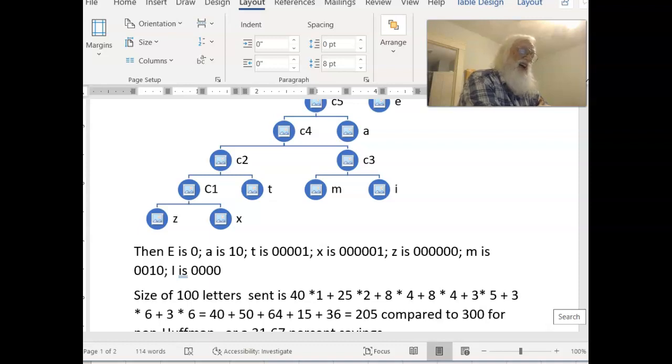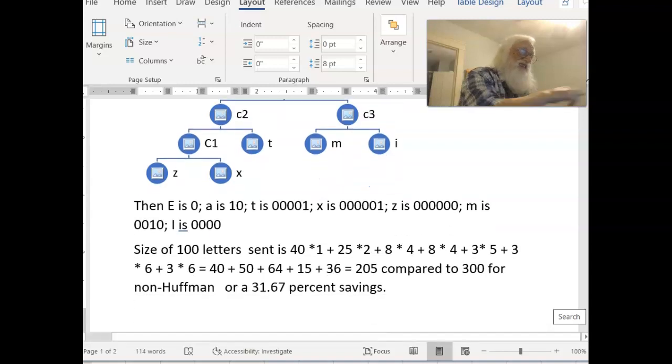For the M and I, it would have eight times four bits, and then so on and so on. I calculated this number, and I got 205 bits to send 100 letters versus 300 if we're not using Huffman. And that's a saving of 31 and two-thirds percent.